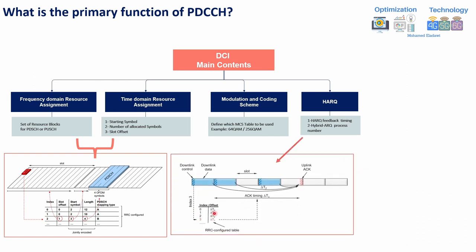For example, the DCI is received here, then the user starts receiving downlink data. Once the downlink data is received, he needs to send an acknowledgement to confirm receipt. The DCI tells him that the downlink confirmation should be sent at index 3, meaning a delta of three time slots from the current downlink data slot — counting slot 1, 2, 3 — so the acknowledgement is sent at that particular slot.